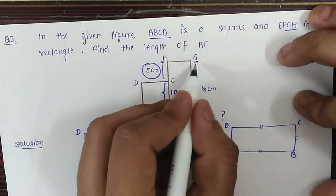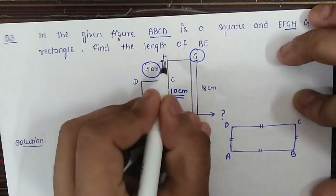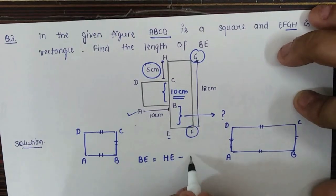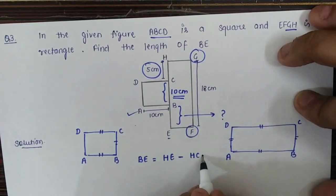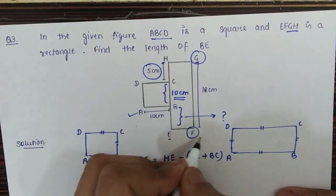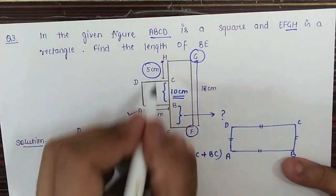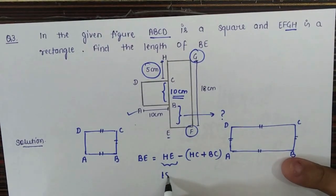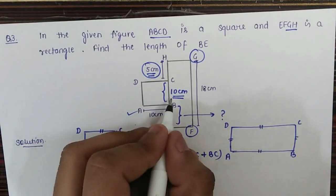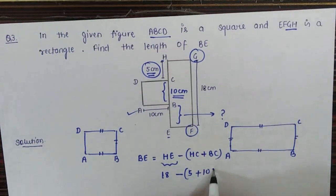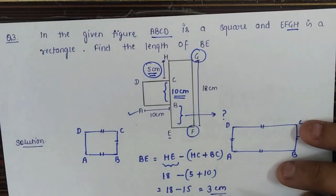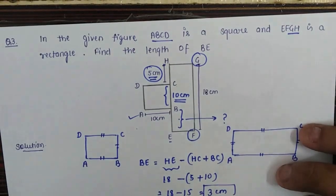Looking at the figure, HE equals GF because it is a rectangle, so HE is 18 centimeters. CH is given as 5 centimeters and BC is 10 centimeters. So BE equals 18 minus 5 minus 10, which gives 3 centimeters. That is the length of BE.